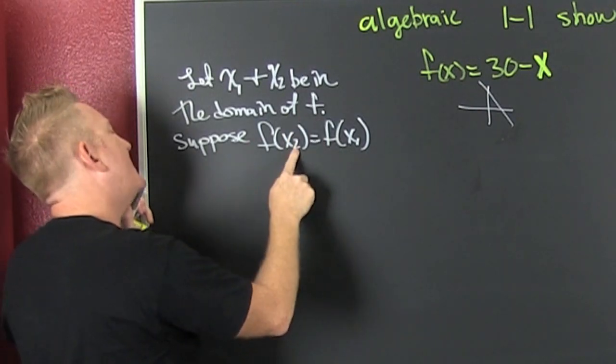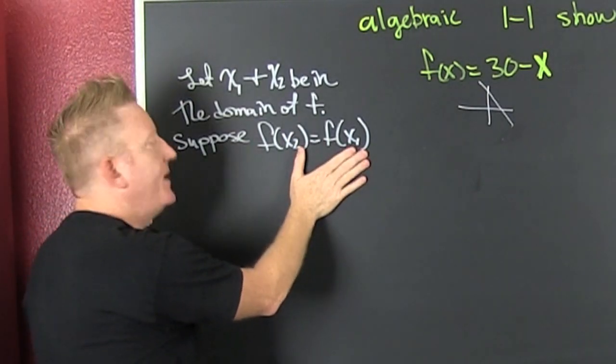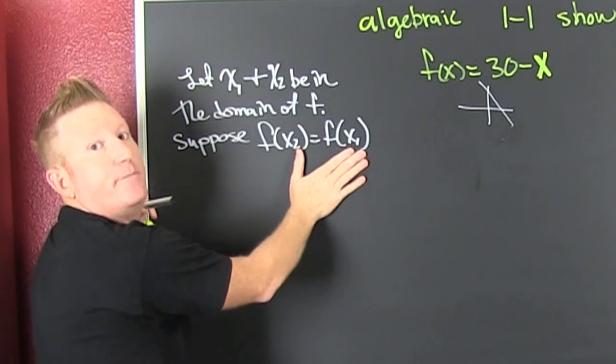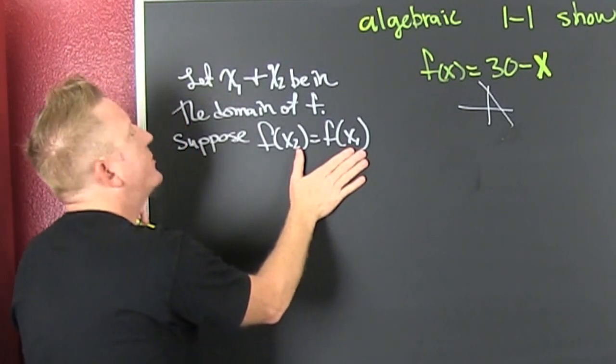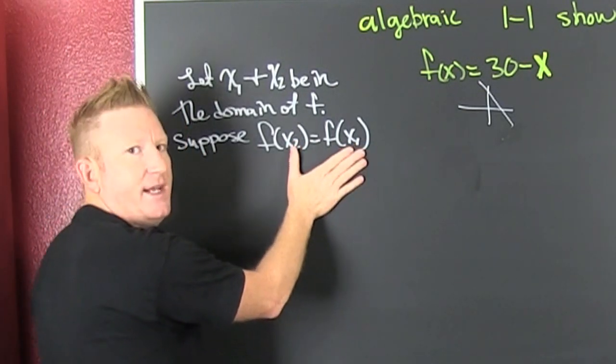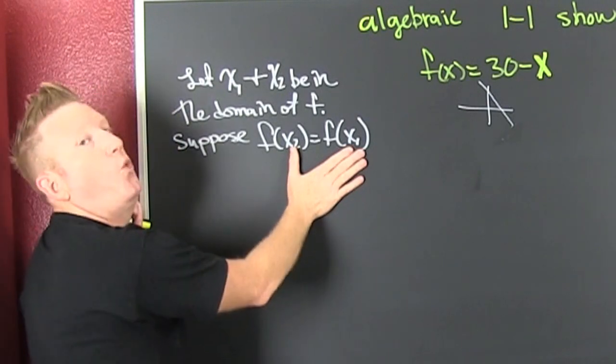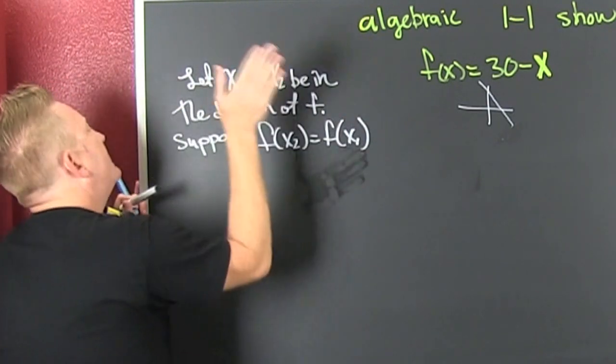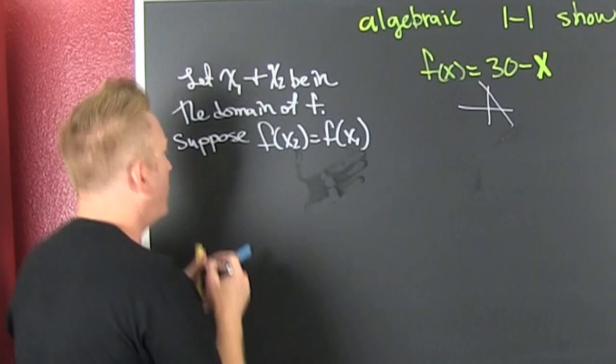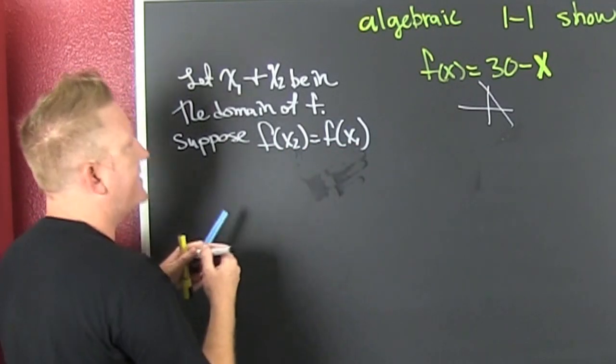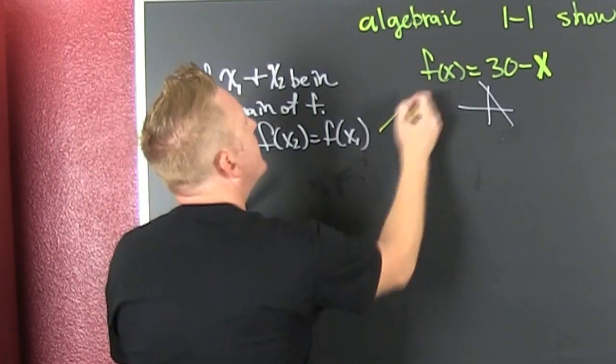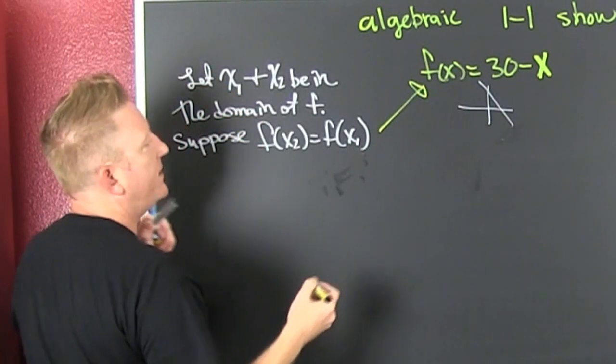Now, we suppose that they have the same y value. If they have the same y value, then they have the same range value. And we're trying to show that if they have the same range value, if they have the same y value, then they have to have the same x value. So I go and I suppose that, and we're using this f there. What the f? That's, yeah.